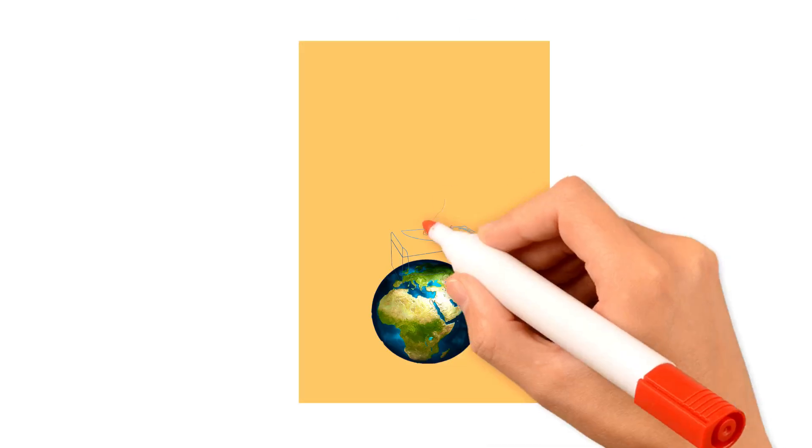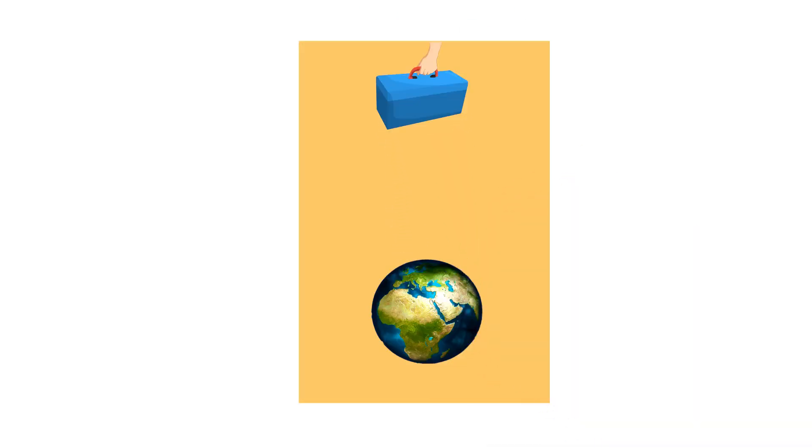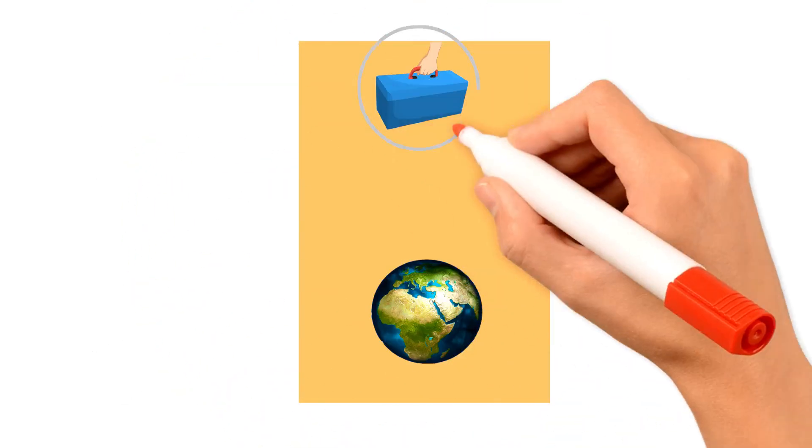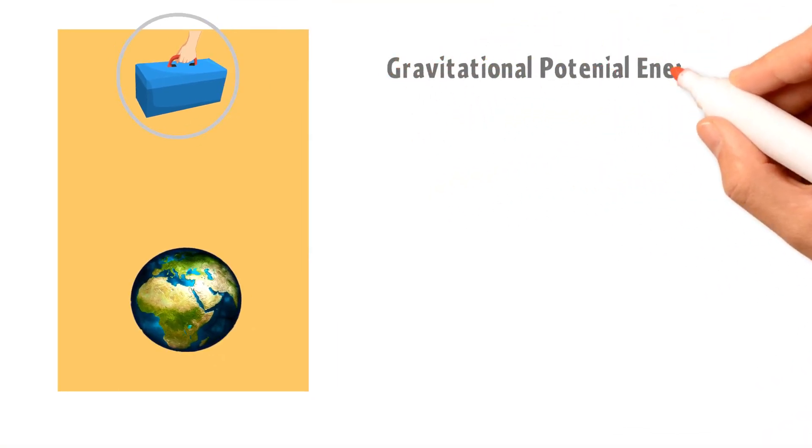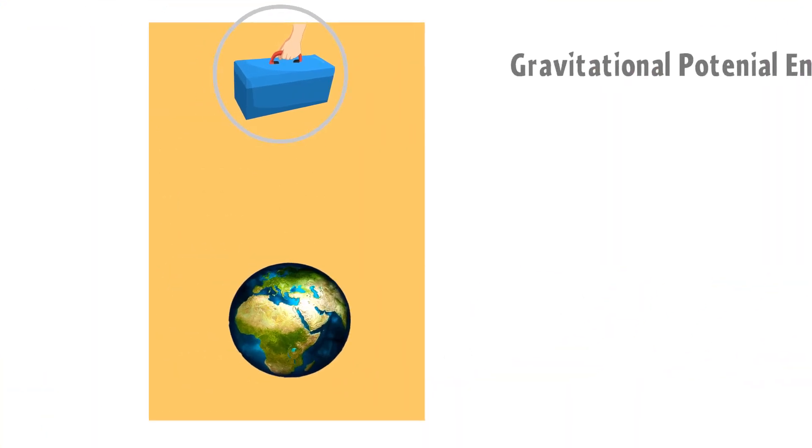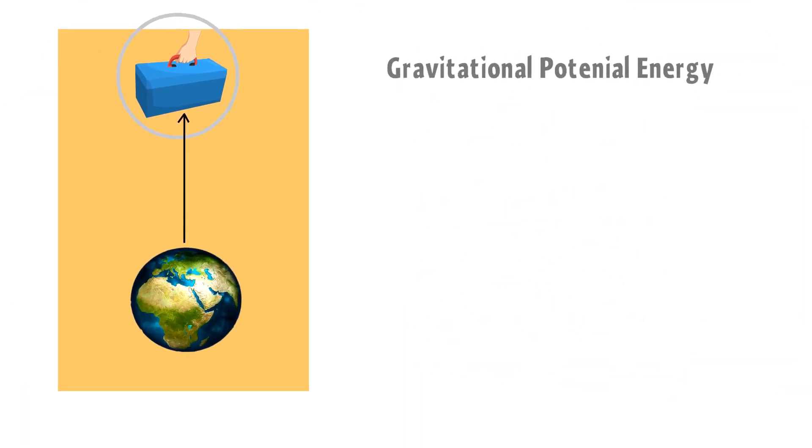As we know that when we raise an object above the earth's surface, this body possesses gravitational potential energy. It also means, if you change the position of an object in gravitational field vertically, the body will gain gravitational potential energy.